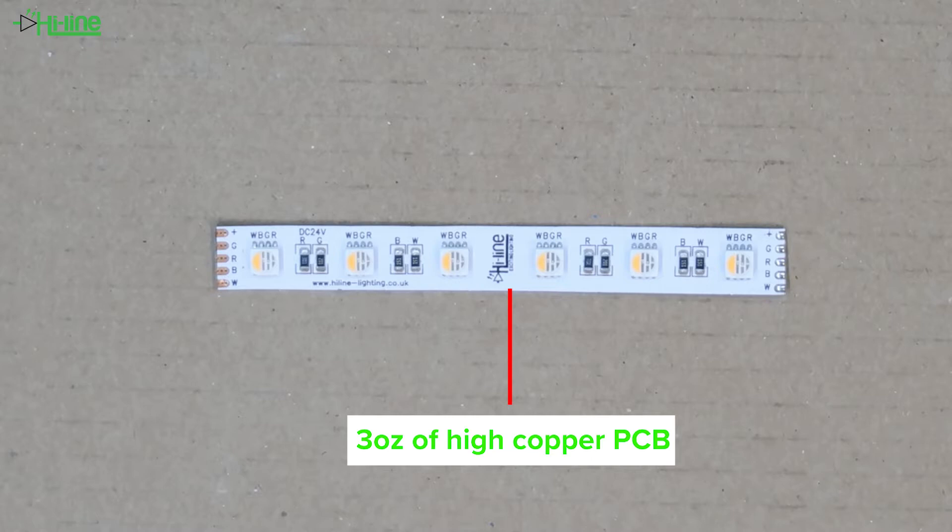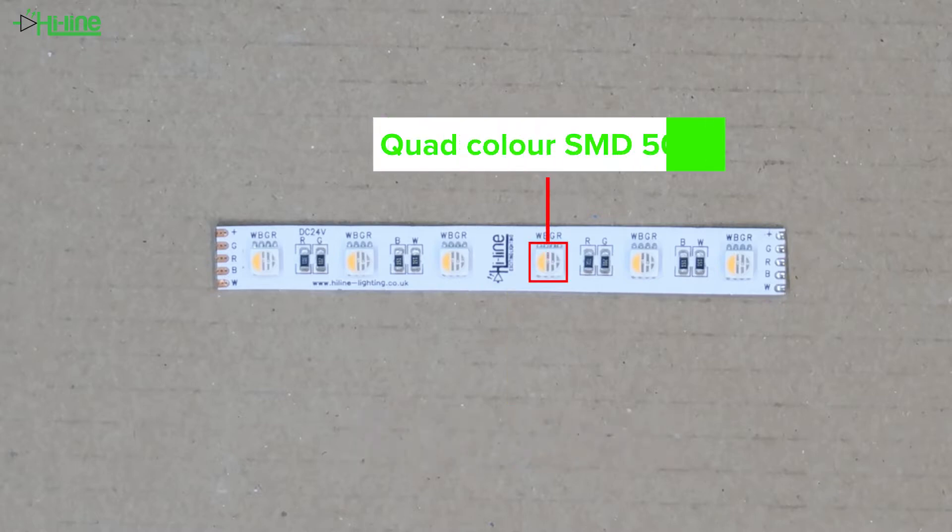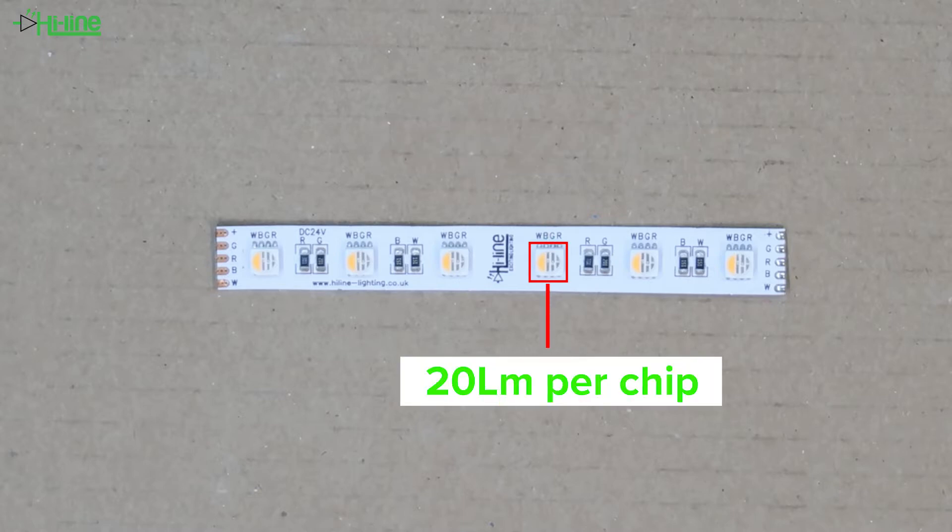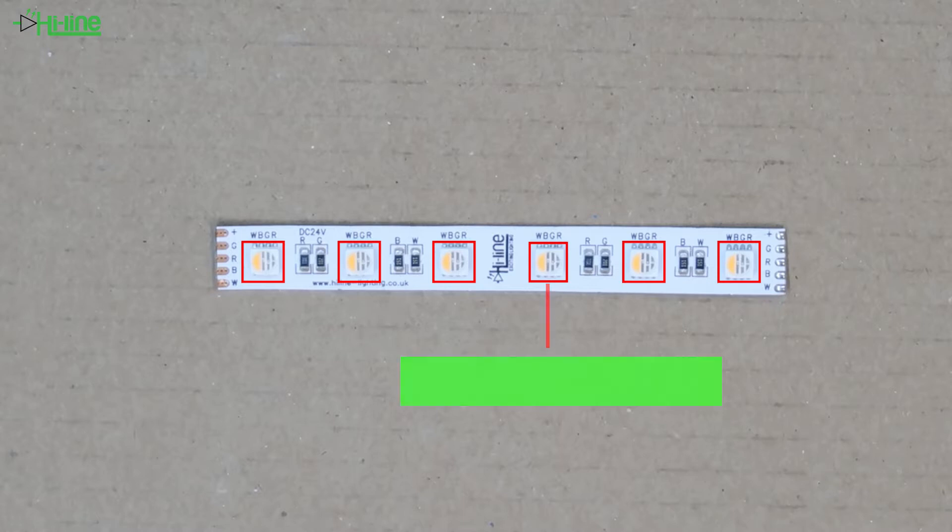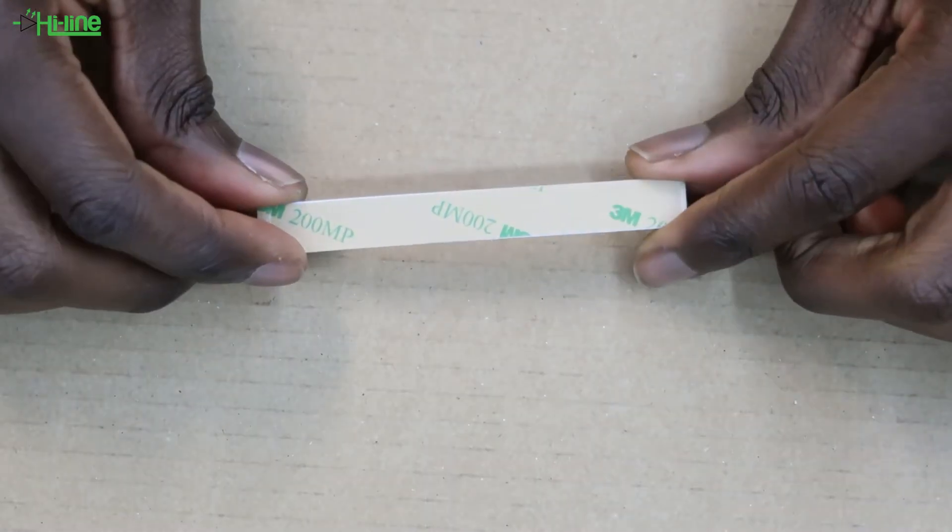It is made with our RGBW SMD 5050 LED chip and each chip is able to produce 20 lumens. You have six LEDs every hundred millimeters and you can easily install it as it is fitted with 3M adhesive tape.